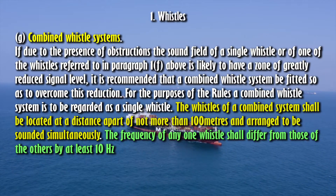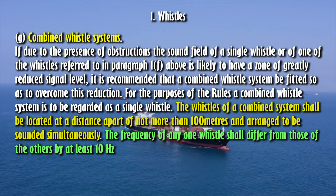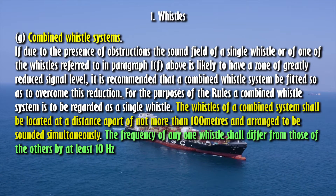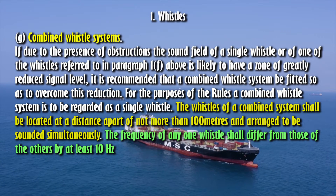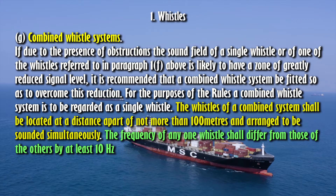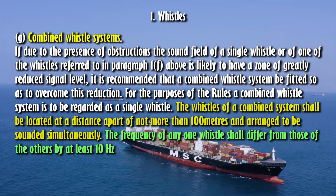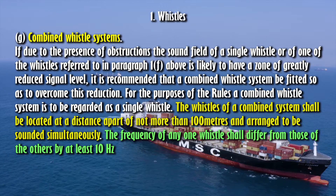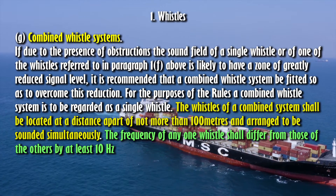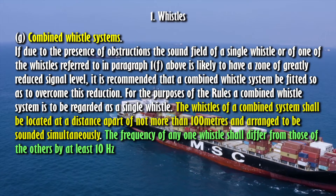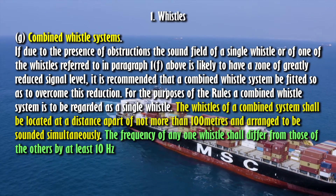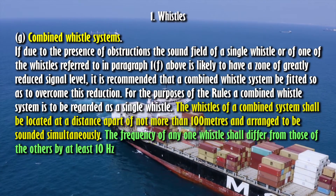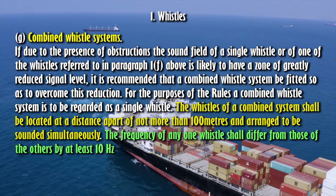G. Combined whistle systems. If due to the presence of obstructions the sound field of a single whistle, or of one of the whistles referred to in paragraph 1(F) above, is likely to have a zone of greatly reduced signal level, it is recommended that a combined whistle system be fitted so as to overcome this reduction. For the purposes of the rules, a combined whistle system is to be regarded as a single whistle. The whistles of a combined system shall be located at a distance apart of not more than 100 meters and arranged to be sounded simultaneously. The frequency of any one whistle shall differ from those of the others by at least 10 Hz.